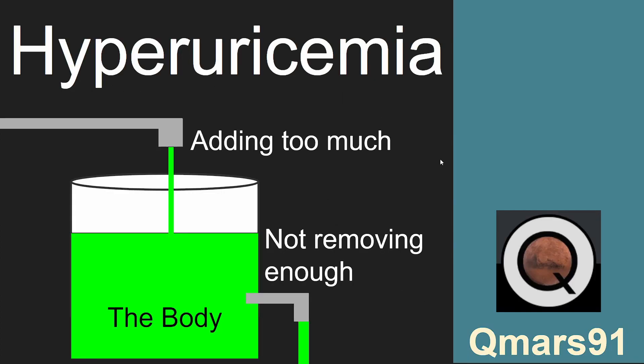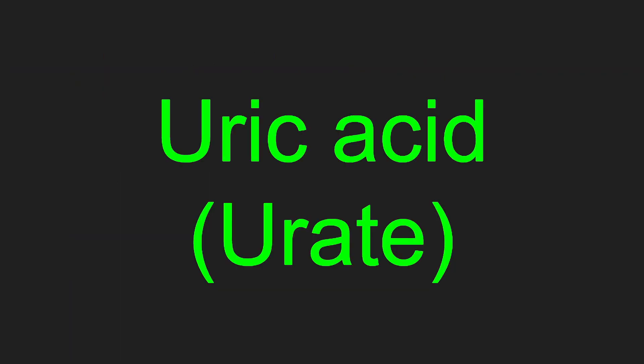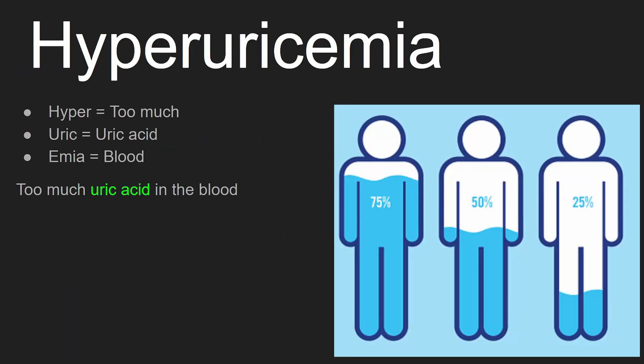This video will be about hyperuricemia. Hyperuricemia is all about uric acid or urate. If we break down the word, it means too much uric acid in the blood.